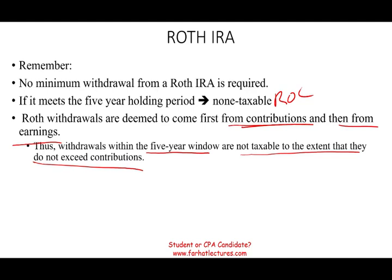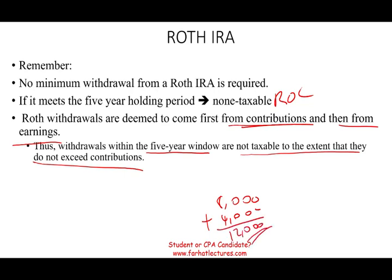Let's assume you did not wait five years and you started to take money out. The assumption is you're taking your principal out first. Once that principal is depleted — let's say you contributed $8,000 total to your account and it earned $4,000, so you have $12,000 in the account — if you take any money out within that five-year period, it's assumed to come out of the principal (return of capital) first, which is not taxable. The $4,000 represents the earnings.